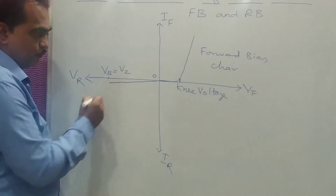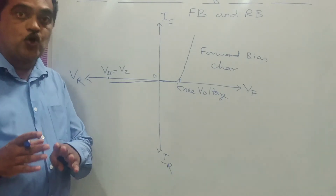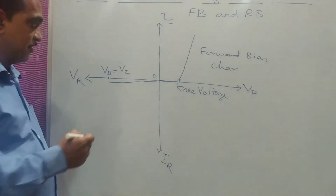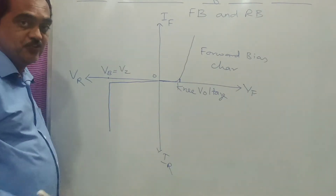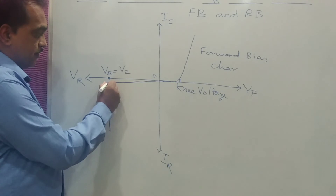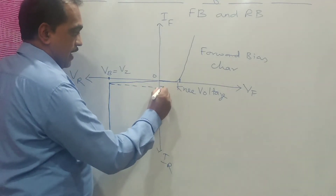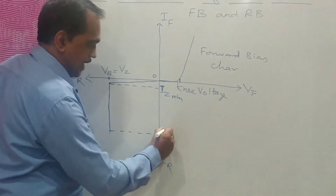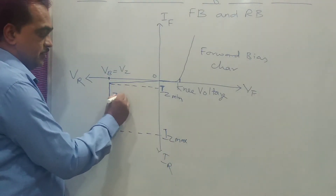And once it reaches that Zener voltage, the strong electric field of the depletion layer will generate many majority charge carriers. Then there is a drastic, heavy current flowing at a constant voltage. This is a very important characteristic of Zener diode — current is flowing at a constant voltage. You can call this current as IZ minimum current and this as IZ maximum current. And this is the area which is giving you Zener breakdown.